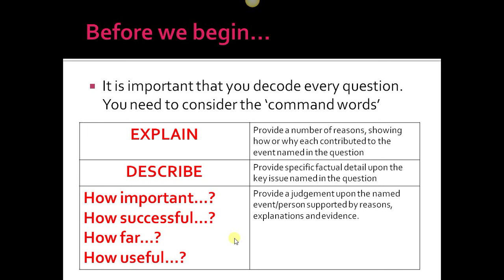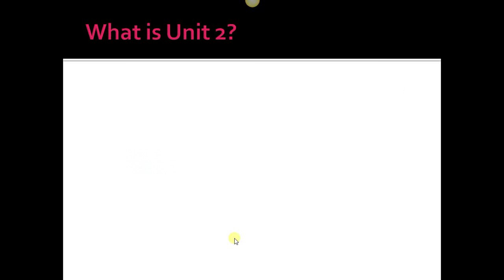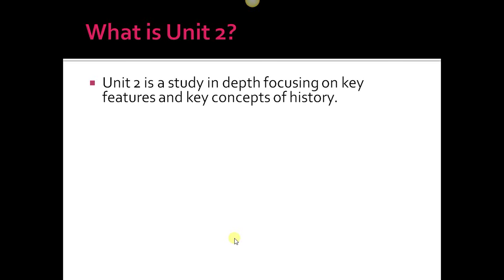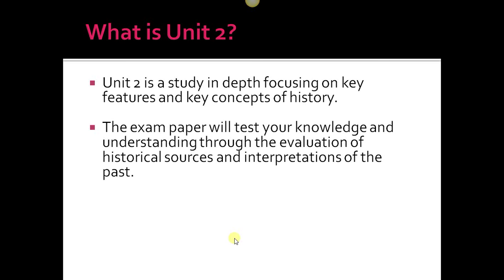What is Unit 2? It's a different paper from Unit 1. There's not as many sources, only two on this paper. Unit 2 is a study in depth focusing on key features and key concepts of history. The exam paper will test your knowledge and understanding through the evaluation of historical sources and interpretations of the past.